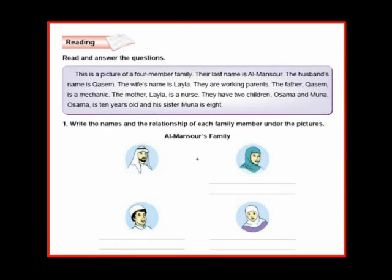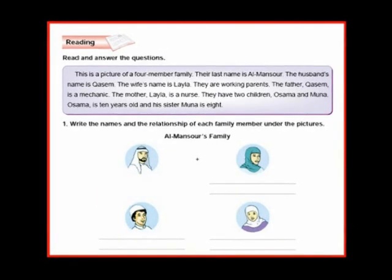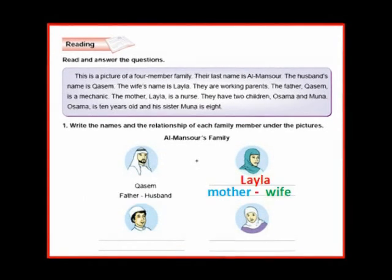This is a picture of a four-member family. Their last name is Al-Mansur. The husband's name is Karsim. The wife's name is Layla. They are working parents. The father, Karsim, is a mechanic. The mother, Layla, is a nurse. They have two children.